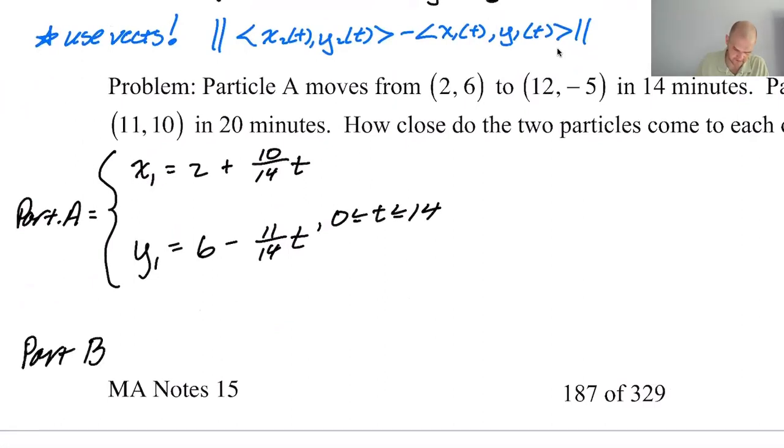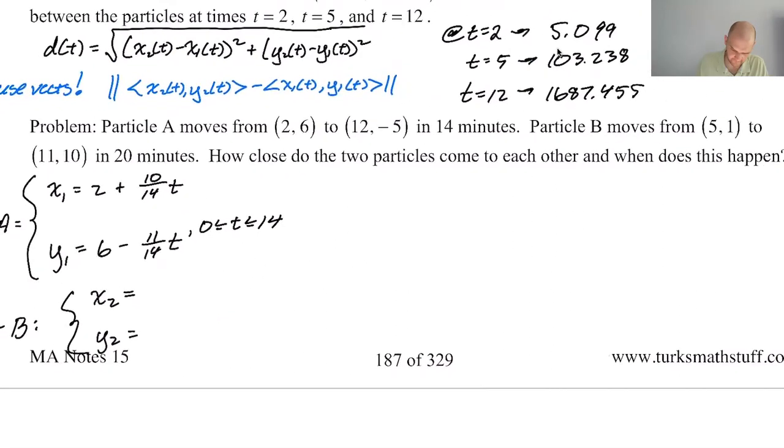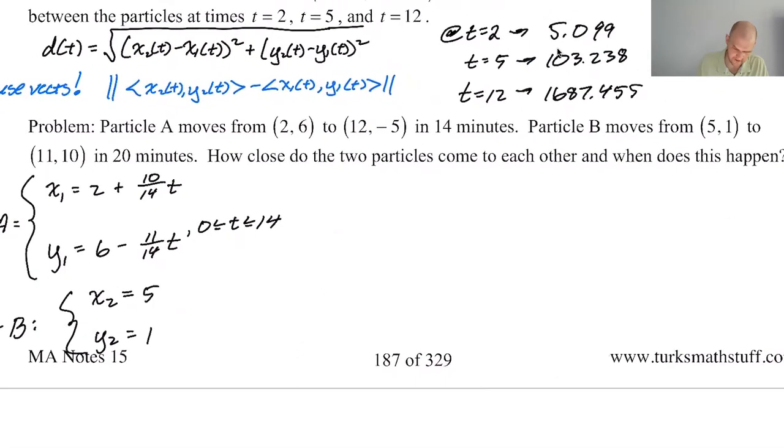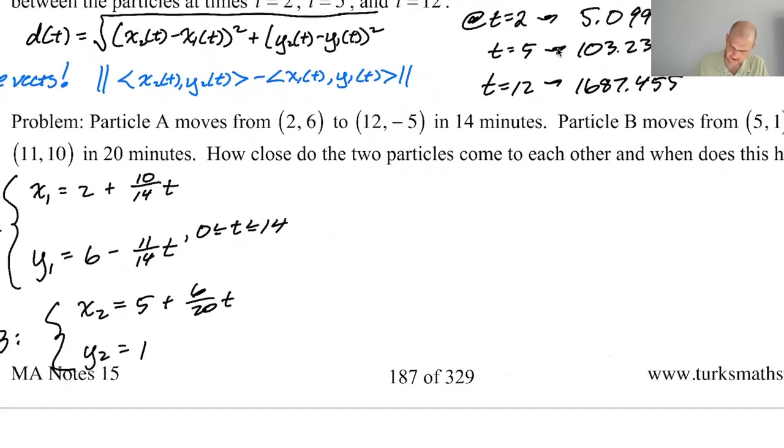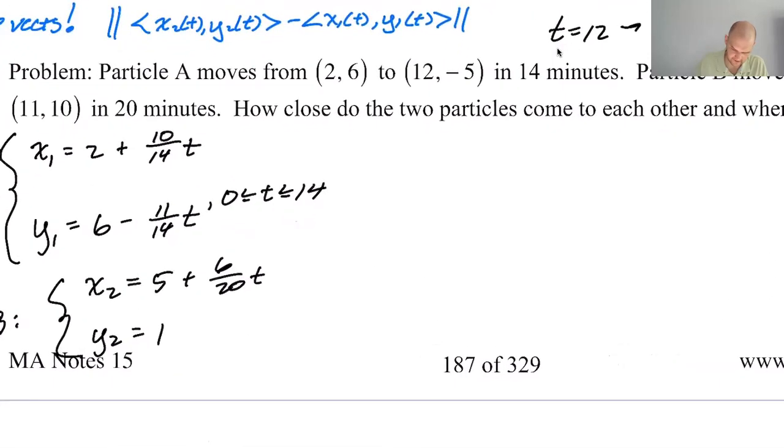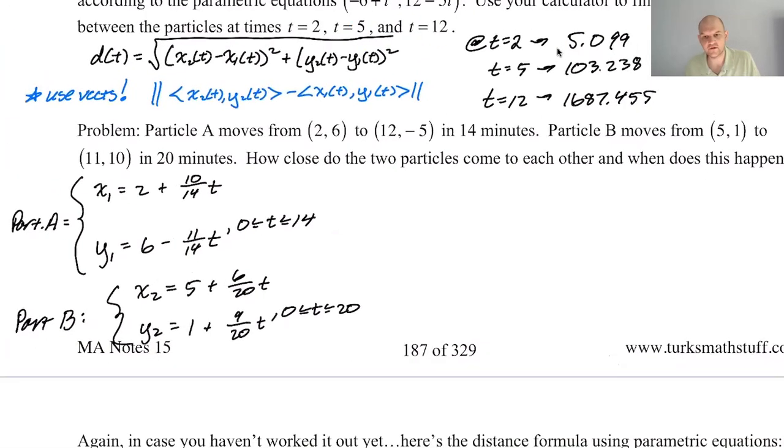Particle B, because that's a thing. x2, y2. So where do you start? You start at 5, 1 and then it takes you 20 minutes. So you need to pick up 6 in 20 and then you need to pick up 9 in 20. And then 0 to 20. Okay. Good to go so far.